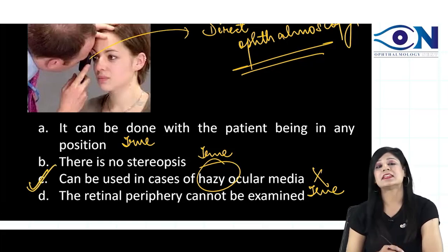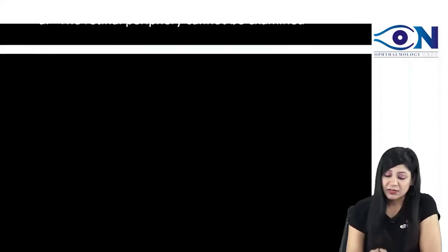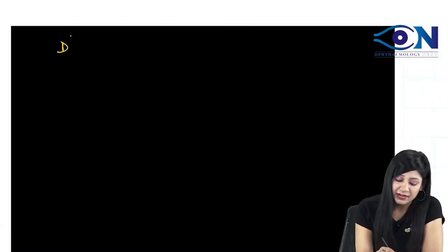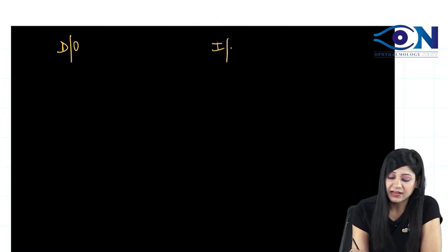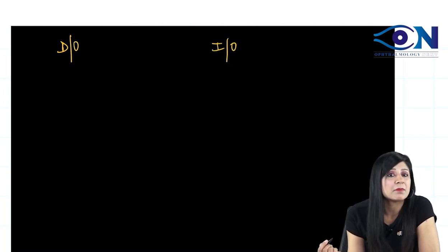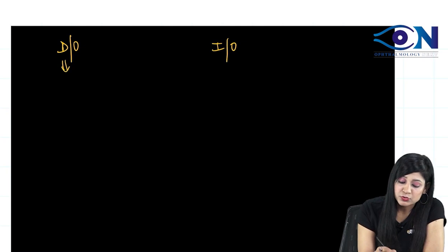So, answer to this question is C. Now, let us see why. When you compare between the direct ophthalmoscopy and the indirect ophthalmoscopy, always remember the direct ophthalmoscopy is here just used for the central retina.